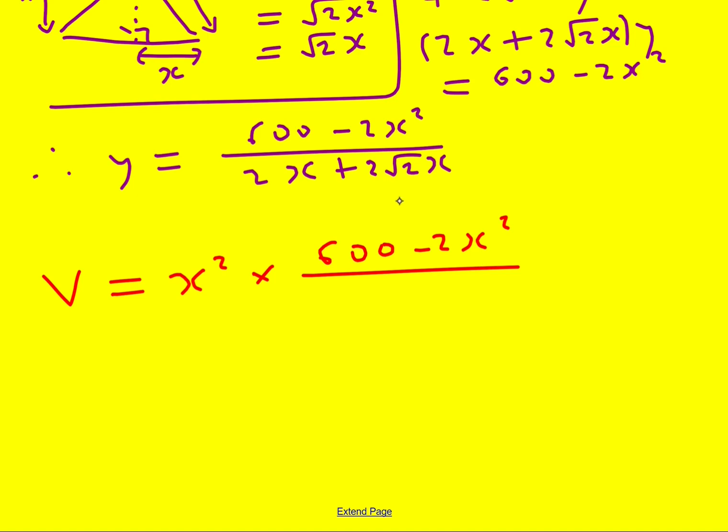I am however going to factor, I should have done this before, I'm going to factorize a 2X out, so it's going to give me 1 plus root 2. Now that's looking better. Now this X will cancel with that there, and also the 2 will cancel. I'm going to cancel the 2 out now, so that's going to become 300 and I can times through by the X, so it's going to become 300X minus X cubed all over 1 plus root 2.